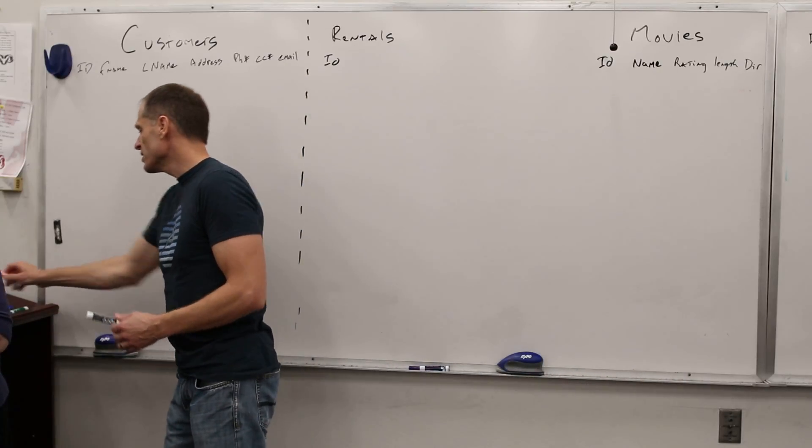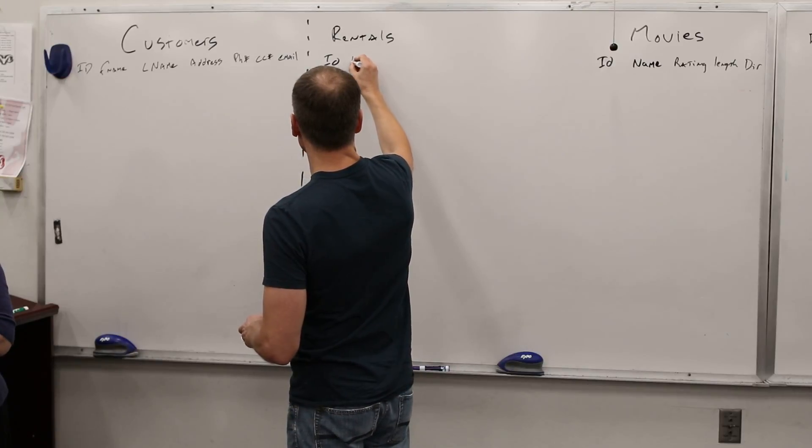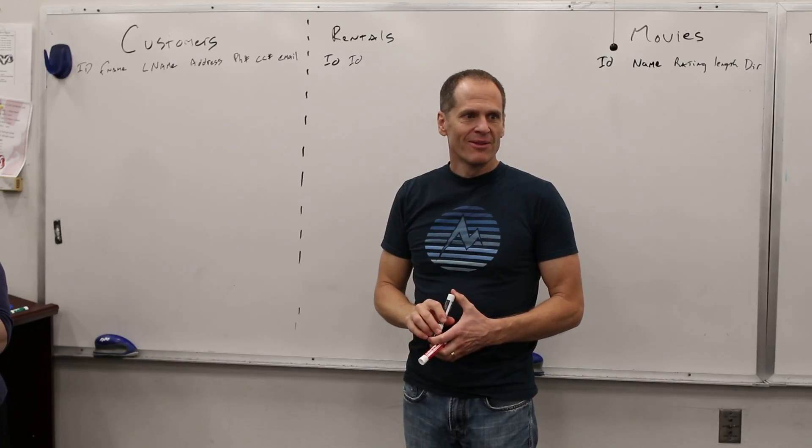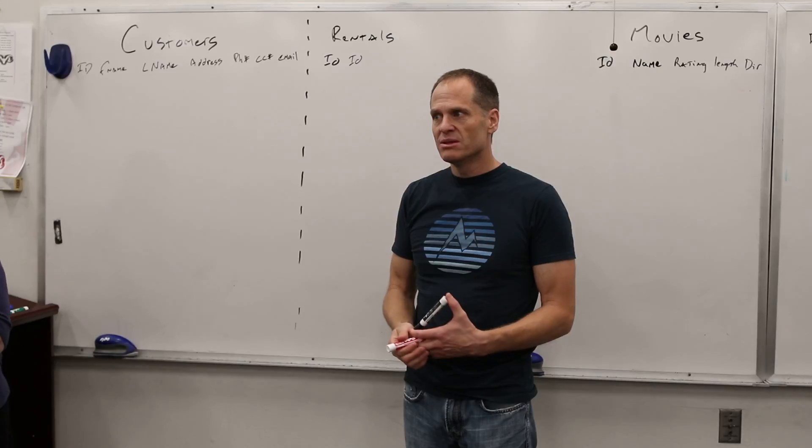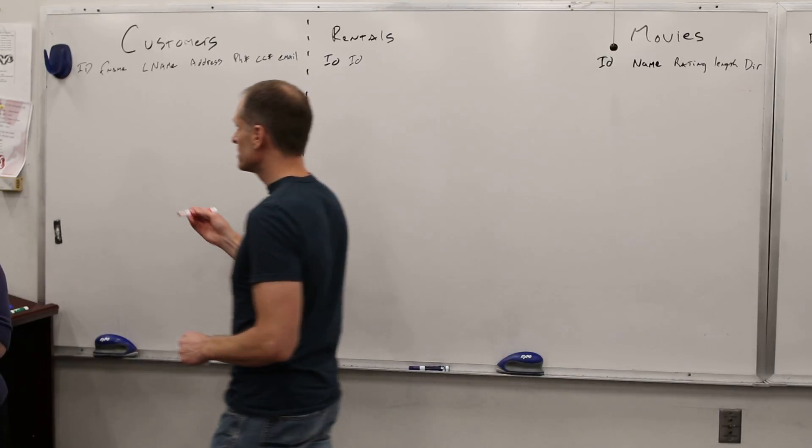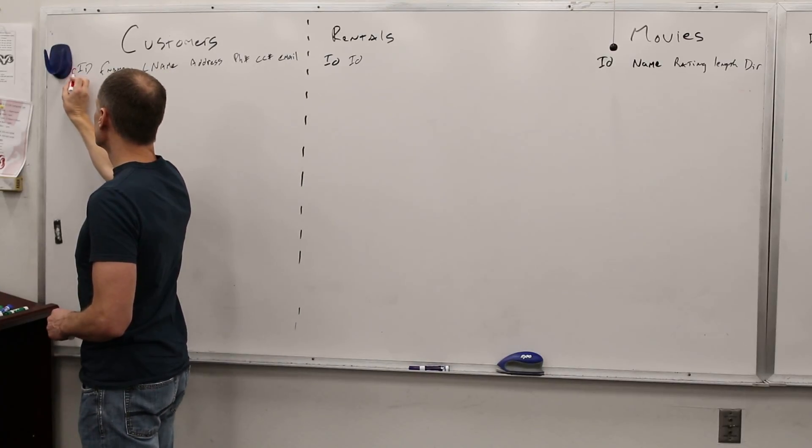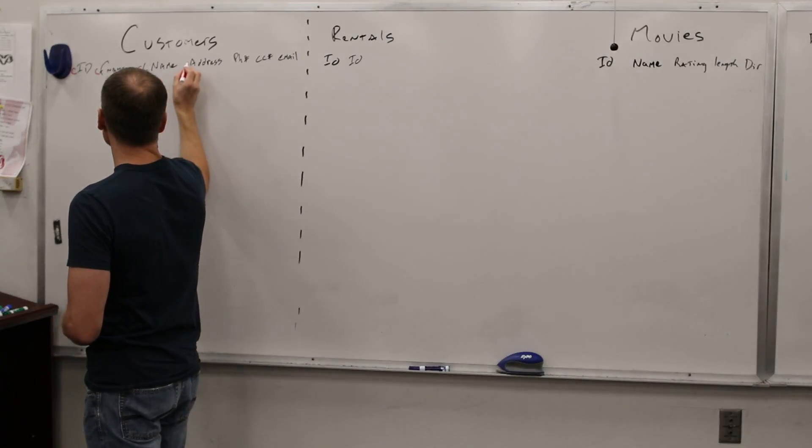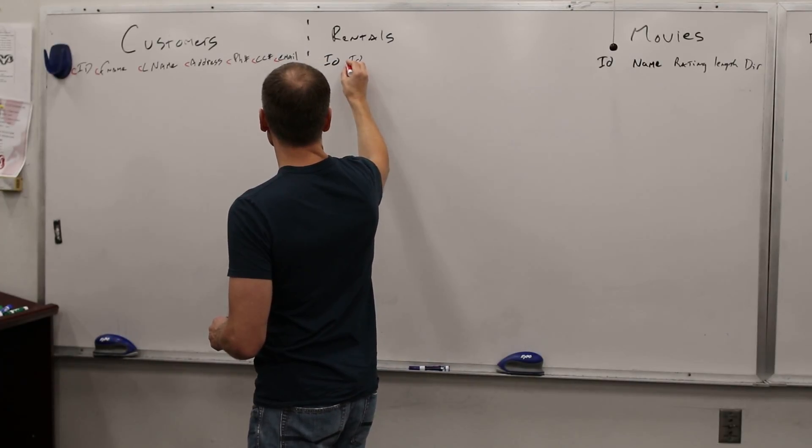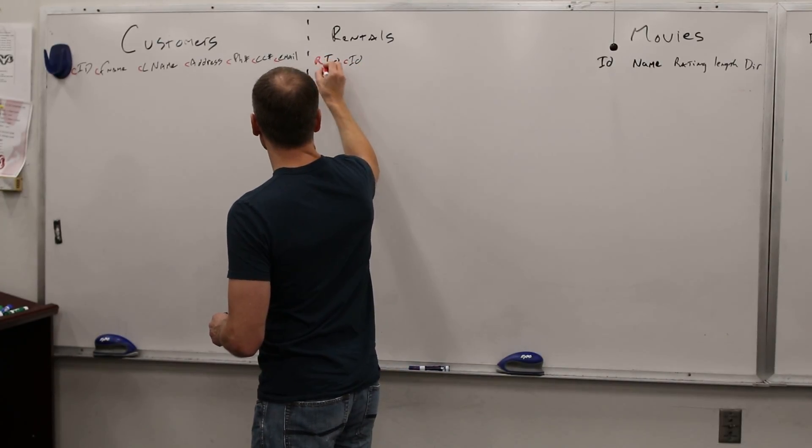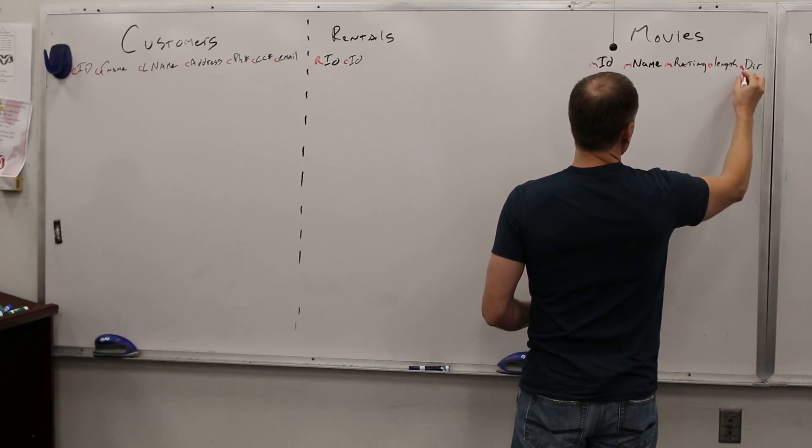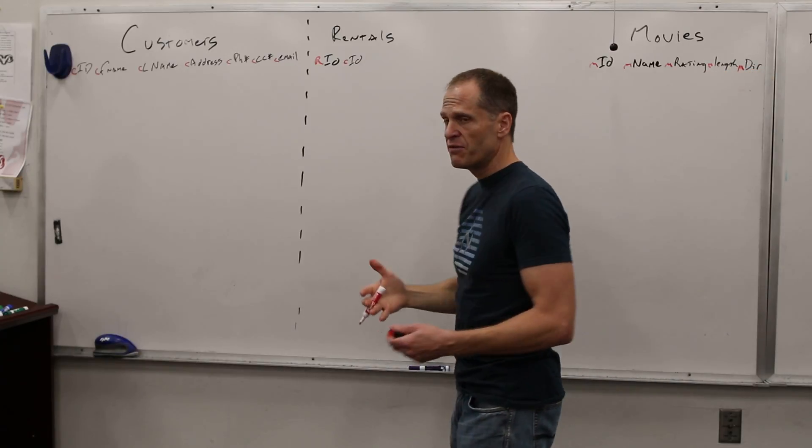But here we have a problem. Because if I just write customer ID as the field ID, uh-oh. So one of the things you want to do when you create your tables is you want to prefix all of your fields with something which identifies which table that field is from. So this would now be customer ID, this would now be rental ID, this would now be movie ID. And you want these things to be descriptive too, so you understand what the fields are.